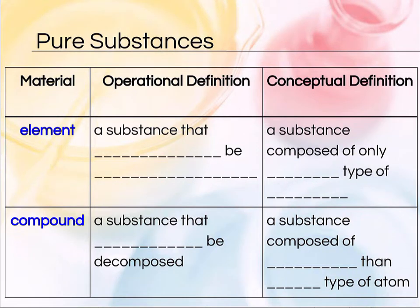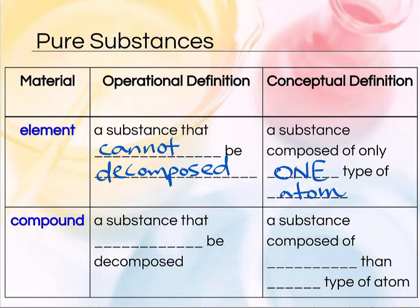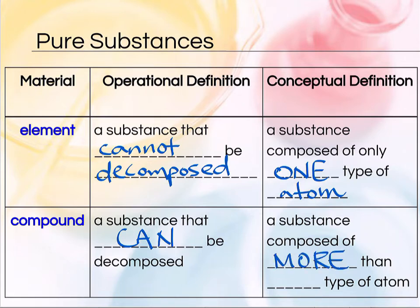So let's summarize what we have so far. A substance that cannot be decomposed is considered to be an element, and an element is a substance that's made of only one type of atom. On the other hand, a compound is a substance that can be decomposed by any kind of chemical means, and they are made of more than one type of atom. But they always come in a specific whole number ratio — typically a very simple whole number ratio.